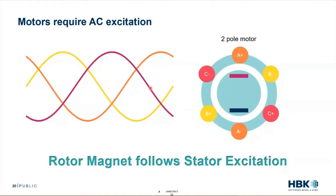This is a necessary explanation to understand motor control — you just have to understand that there's a magnet on the stator following a magnet on the rotor. I'm going to reiterate this probably a dozen times: the rotor magnet follows the stator magnet. With that, we'll jump into a little bit of motor control.